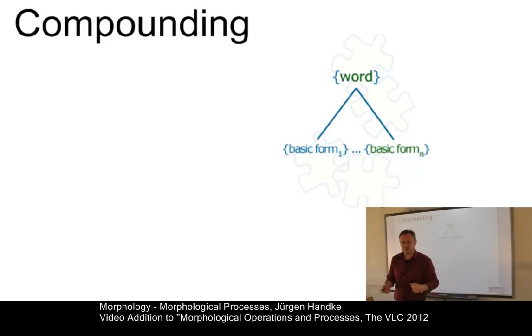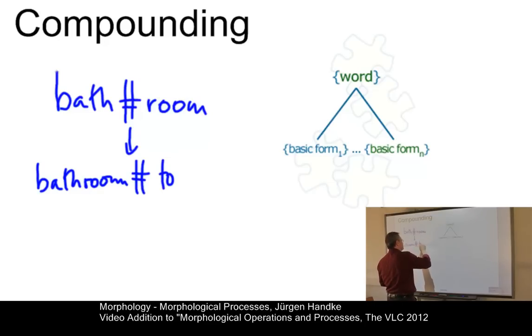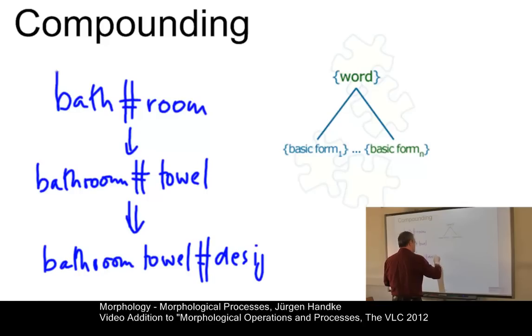Now, in compounding, also sometimes referred to as composition, we have a word formation process that involves at least two base forms or two lexemes. So, we could have something like bath and then add room to it. Now, we have a compound bathroom. This compound can serve as an input to the next step of compounding by generating the next larger compound bathroom towel. Note that I'm inserting morph boundaries here in order to avoid the spelling problems, whether a compound is spelled with a hyphen in a spaced form or in a solid form. And we could go on. We could add designer.